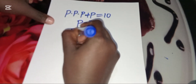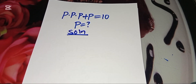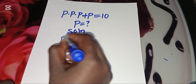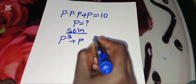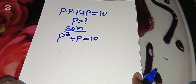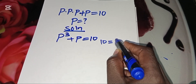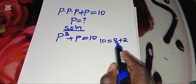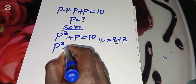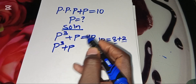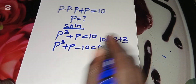Now, solution. We have that P multiplied by P multiplied by P, this is equal to P raised to power 3, plus P, this is equal to 10. From our equation here, 10 can be expressed as 8 plus 2. So we substitute, giving us P cubed plus P subtract 10 is equal to 0.